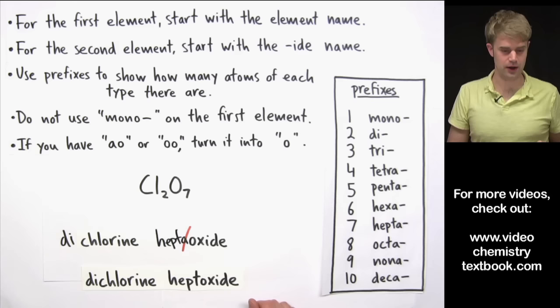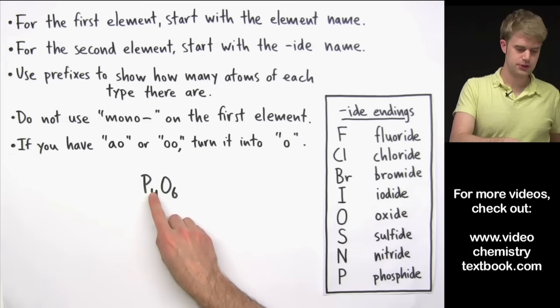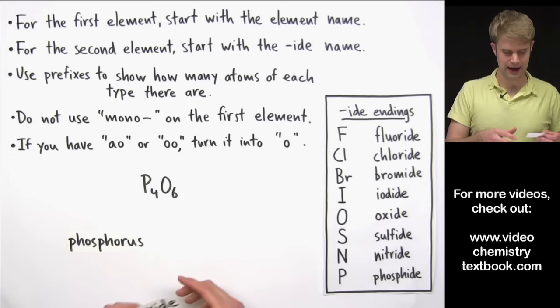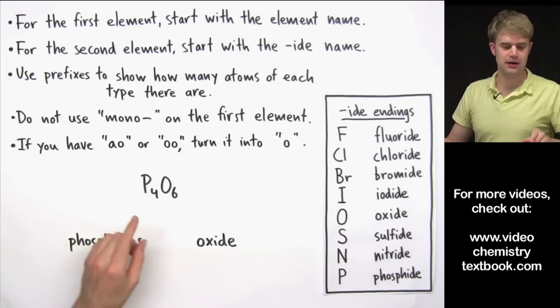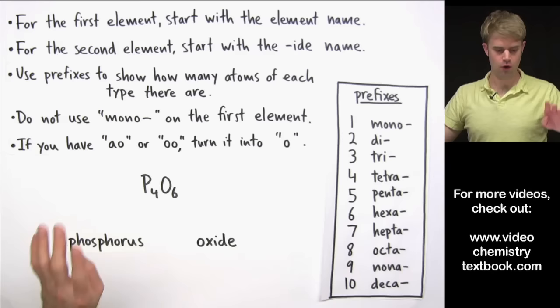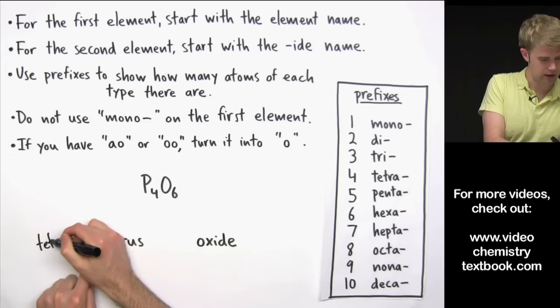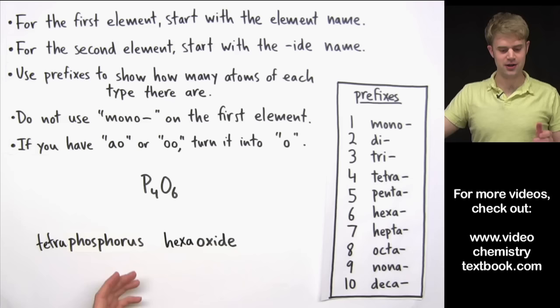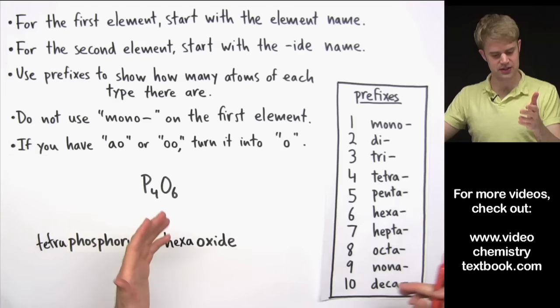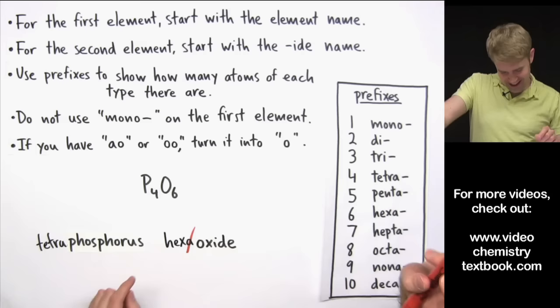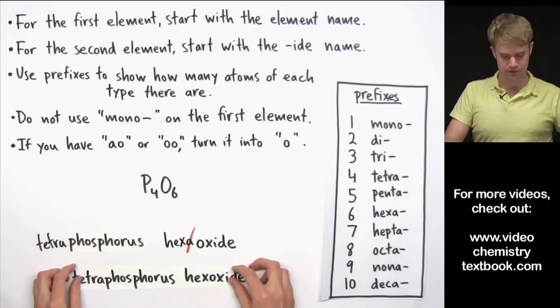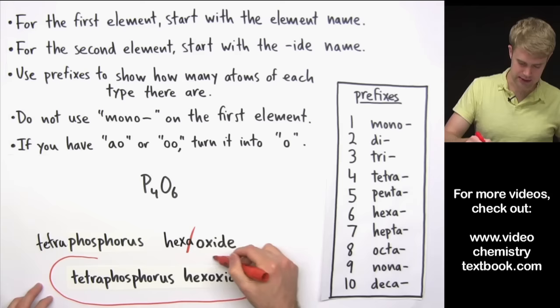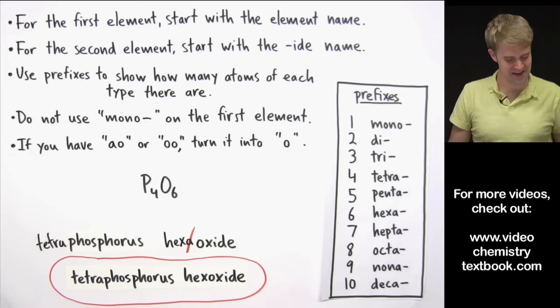P₄O₆: the first element is phosphorus, and oxygen's IDE name is oxide. For prefixes: four phosphorus atoms gives us 'tetra' — tetraphosphorus. Six oxygens gives us 'hexa,' but hexaoxide has an AO combination. So we drop the A and get hexoxide. The full name is tetraphosphorus hexoxide.